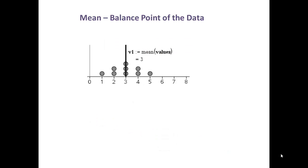Here's another example. In this data set, the mean is already recorded at a value of 3, so that's the balance point. We have three data values that are exactly at the mean, two data values that are one unit above the mean balanced out by two data values one unit below the mean, and one data value two units above the mean balanced out by one data value two units below the mean.